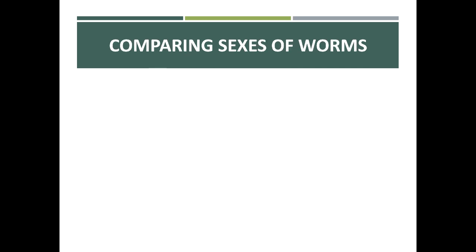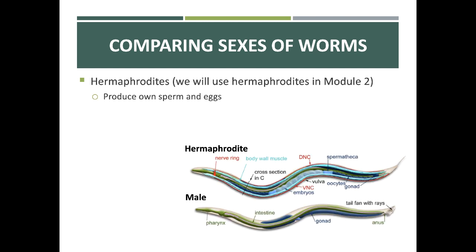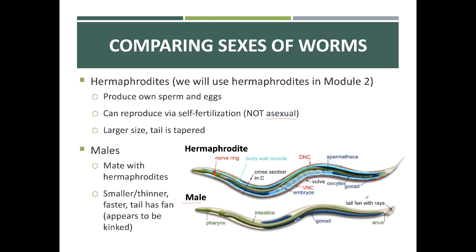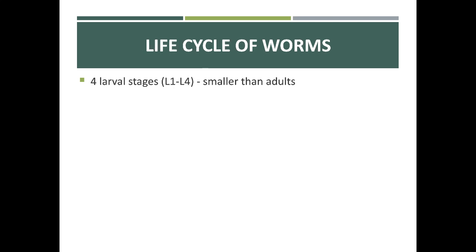An interesting feature of C. elegans is that they can exist as hermaphrodites, meaning they produce their own sperm and eggs in the same worm and can self-fertilize. This is considered an asexual form of reproduction since they do not require another worm to reproduce. In comparison, males only produce sperm and can mate with the hermaphrodite, though the hermaphrodite doesn't need to mate. There are no female-specific C. elegans. The hermaphrodite is larger with a tapered tail, while males are smaller, thinner, faster, and have a distinctive fan-like tail structure.